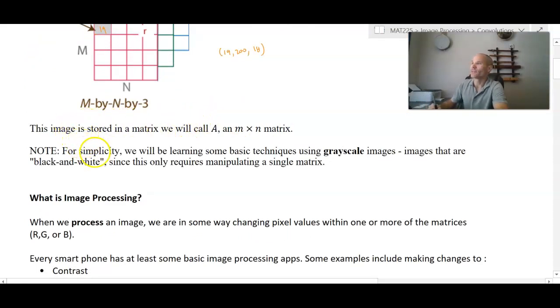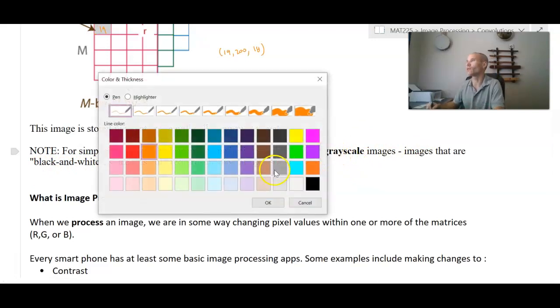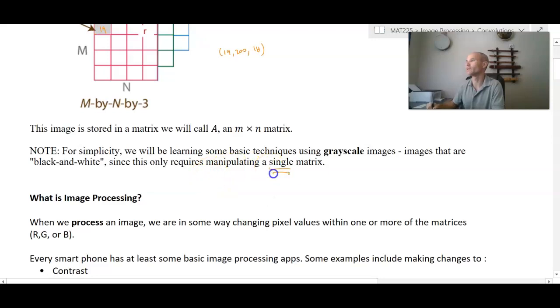So for simplicity, instead of having to deal with these three layers, when you actually convert an image to grayscale, so essentially black and white, you have a shade from totally white to totally black, anything in between in different shades of gray, you call that a grayscale image. And what that allows us to do is it allows us to take these three matrices and compress it down into just one matrix. It just makes it a little bit easier to learn with. So, we're just going to focus on black and white images, since it requires manipulating a single matrix.